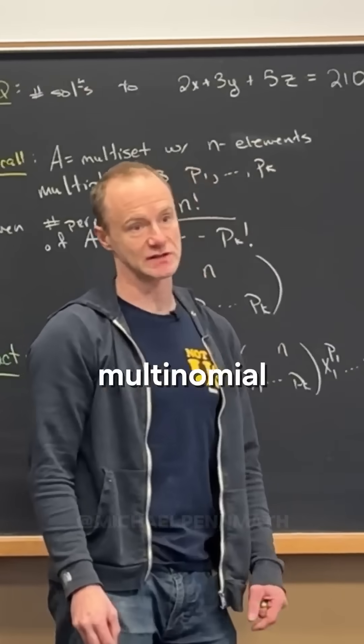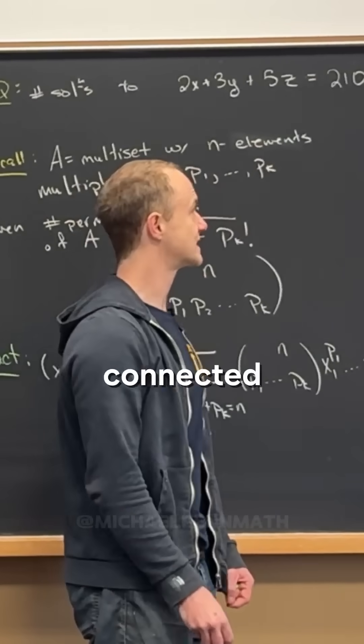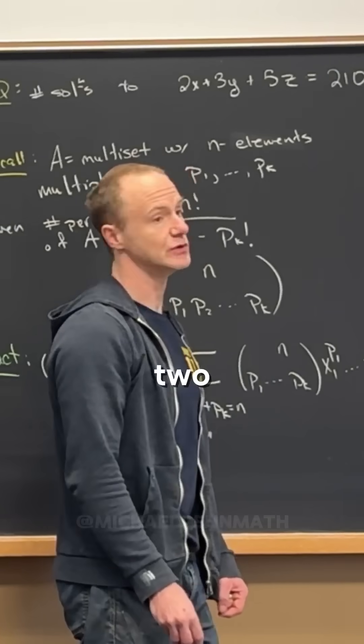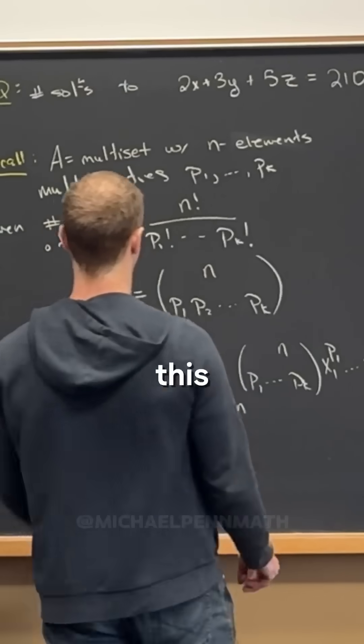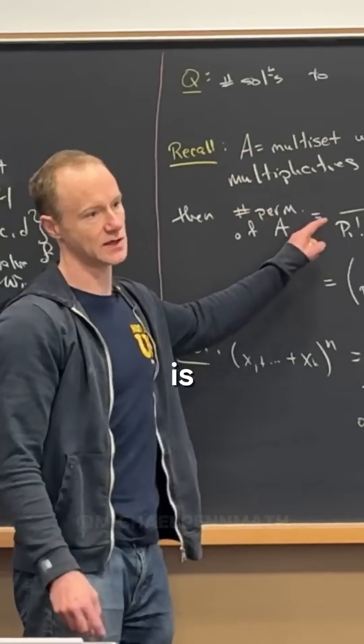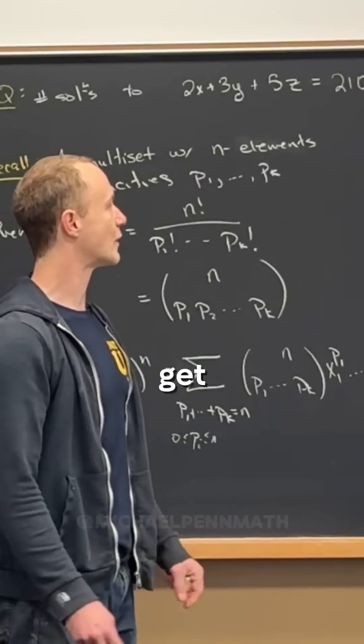I should point out that those are connected to multinomial coefficients, right? Those are connected to 2 choose (2,0,0), but 2 choose (2,0,0) by this rule right here is 1. So anyway we get 1 for each of those.